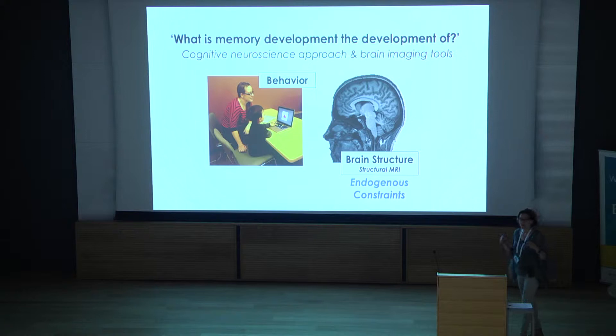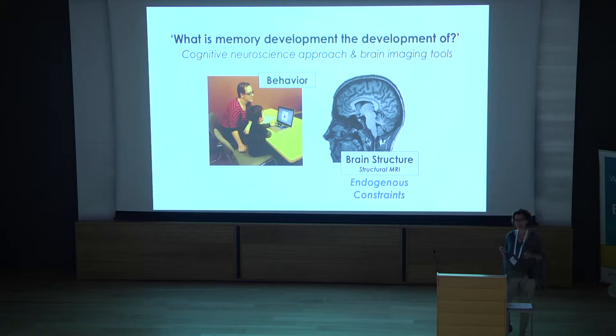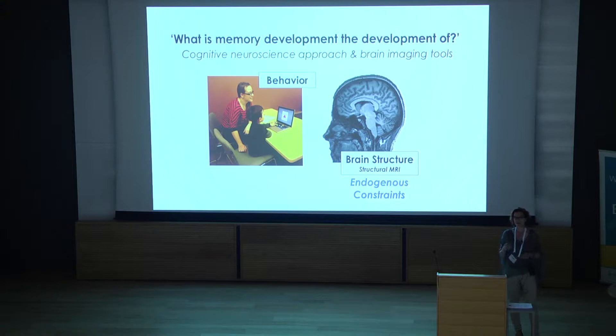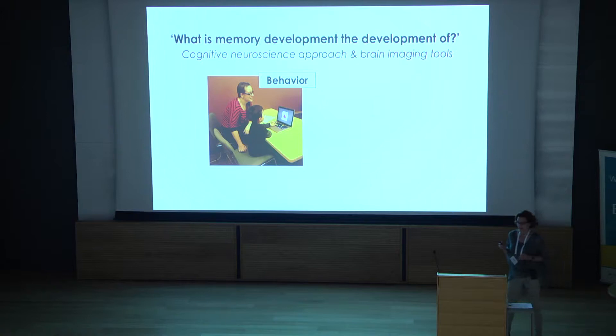Nowadays, with all these fantastic cognitive neuroscience tools and many different types of neuroimaging methods, we can go back and address that same big question by linking it to the brain. I do it in many different ways, looking at function — which I won't talk about today — but also looking at brain structure. The way I think about it is that brain development provides the endogenous constraints that shape what a child can or cannot do compared to an adult.